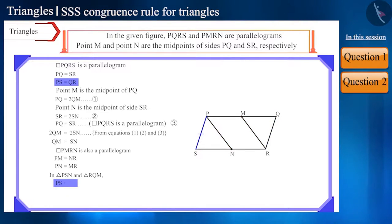Side PS is equal to side RQ. Side SN is equal to side QM. And side PN is equal to side RM. Therefore, these two triangles are congruent according to the SSS congruence rule.